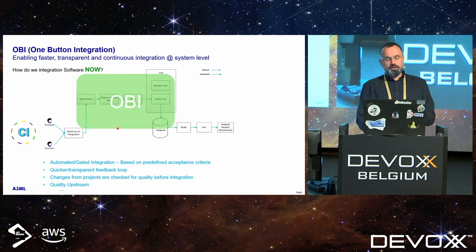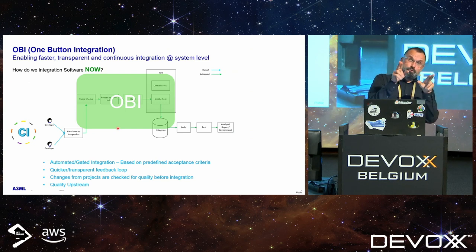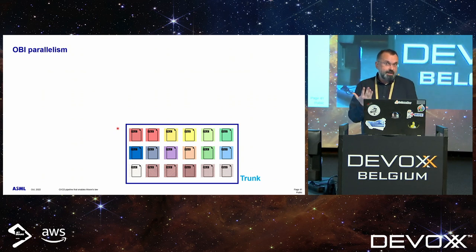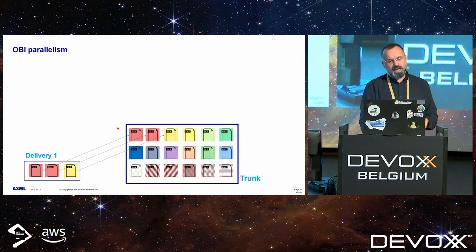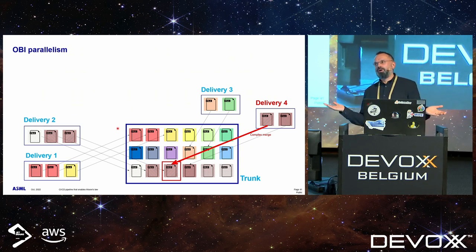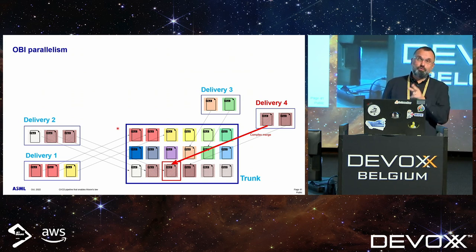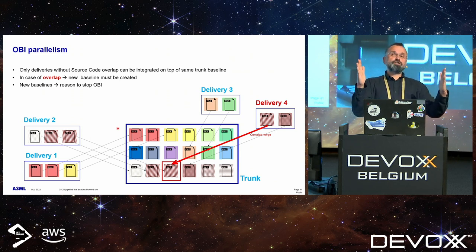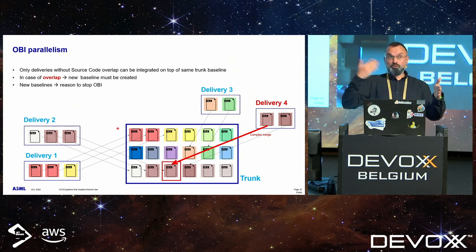If tests are failing, you cannot argue with the robot — you just get your delivery back with an exact explanation of what should be fixed. Fix it and press a button again or call the RESTful API. If tests are passing, you'll be integrated in the main trunk. We call it one-button integration. We can integrate in parallel — up to 16 deliveries at once — but there's a trick: we integrate on a file level. If a fourth delivery touches a file already being processed, it waits for the next baseline. Each integration is time-bound — we try to be within two hours — so we can integrate a lot every day.